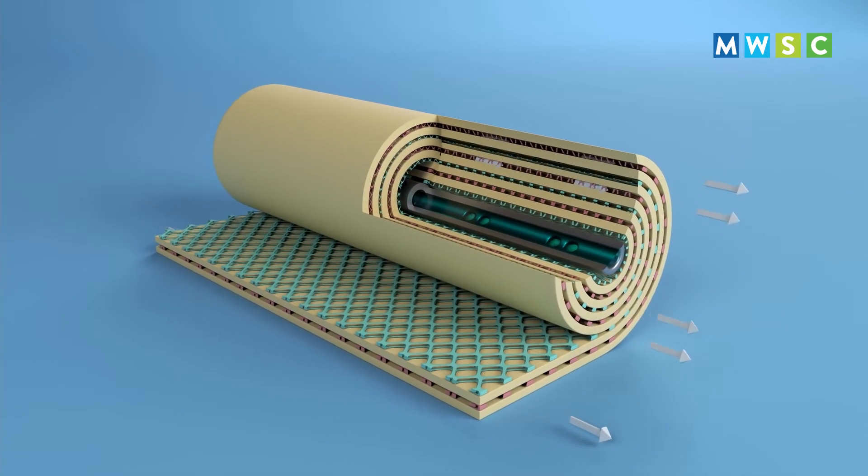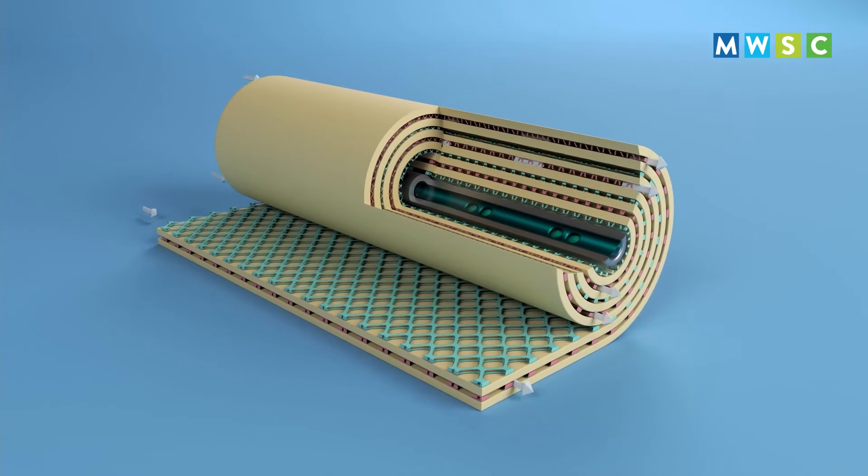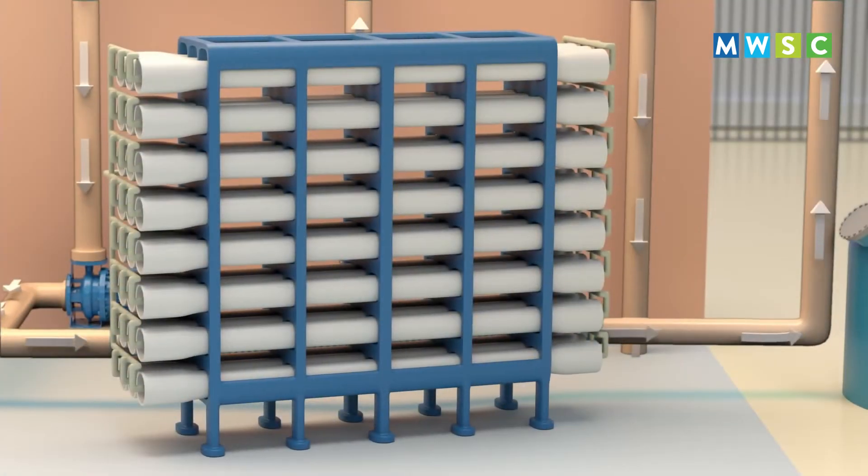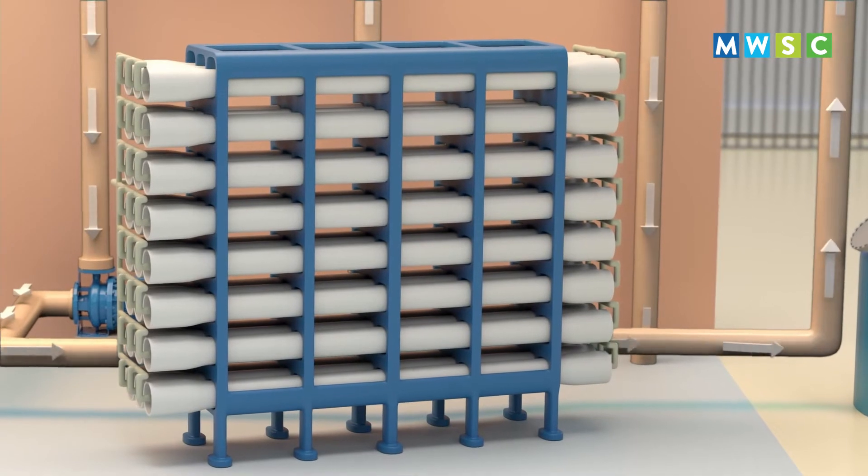The rejected water during the reverse osmosis process is now highly concentrated with salt ions. During this process, the brine water is discharged at high pressure.